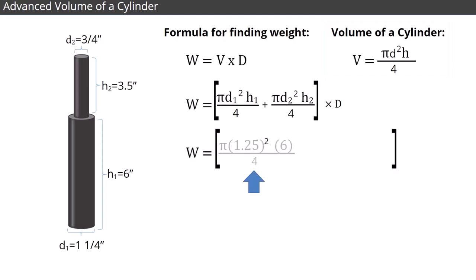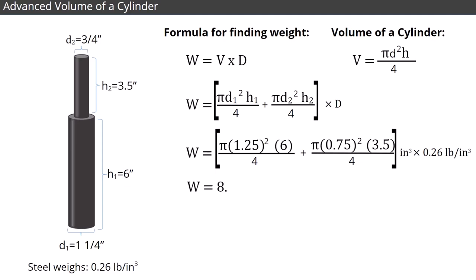We use this formula twice by inserting the dimensions of each cylinder into the equations. Then, we multiply it by steel's density, which is 0.26 pounds per cubic inch. Finally, we round to the nearest tenth and find out that the weight of this steel shaft is 2.3 pounds.